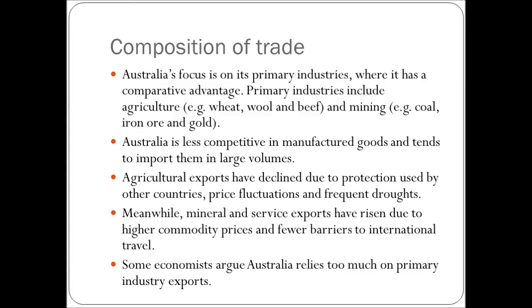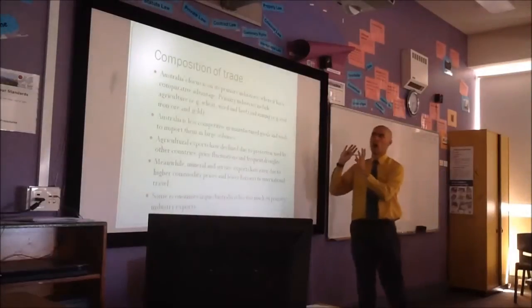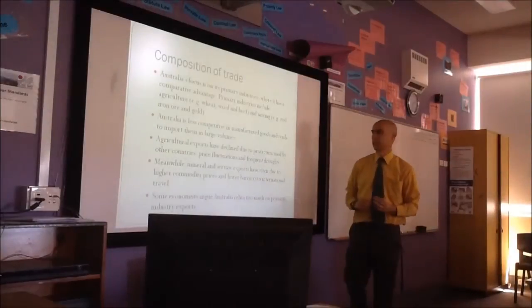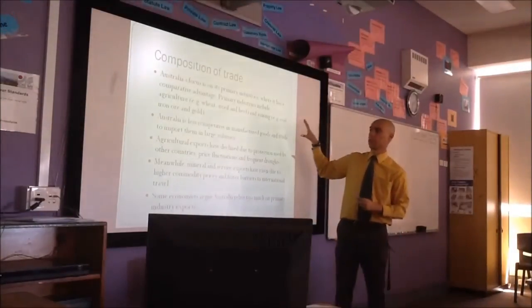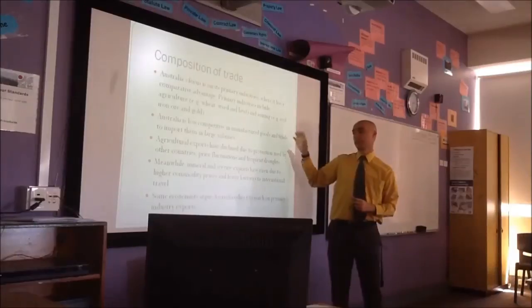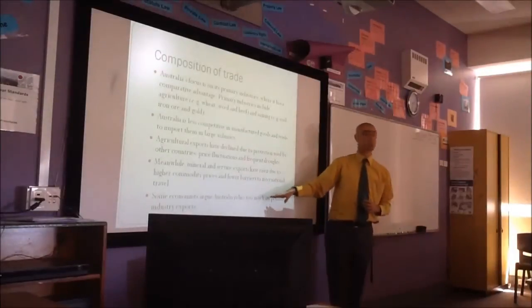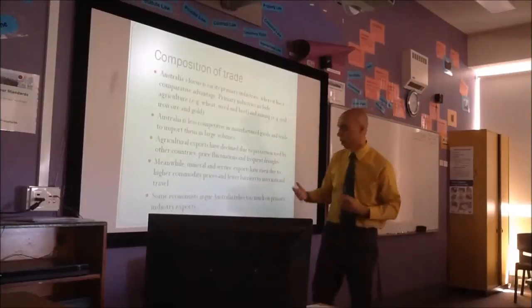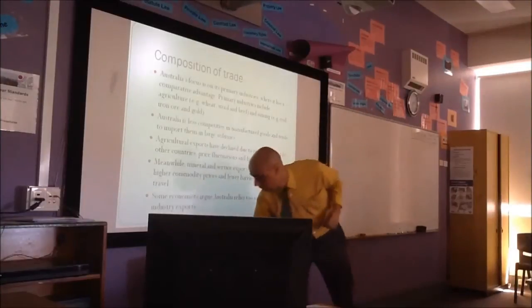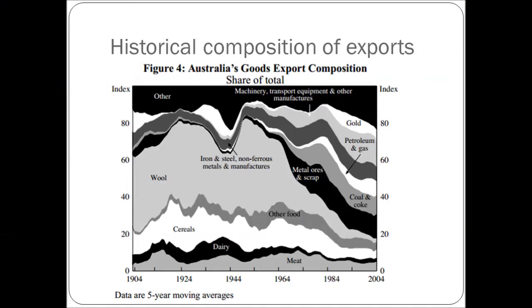Some economists argue that Australia relies too much on primary industry exports. This gives a bit of an idea of what we're going to be looking at — what does Australia sell, what doesn't it sell, what does it import, and does it rely too much on primary resources? The first thing we're going to look at is the historical composition of exports. Historically, what was Australia's biggest export? Wool.